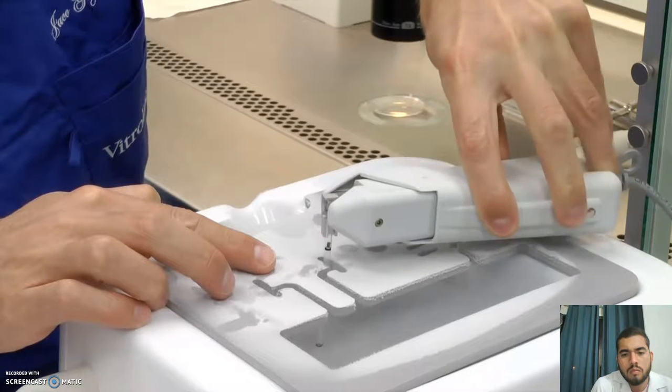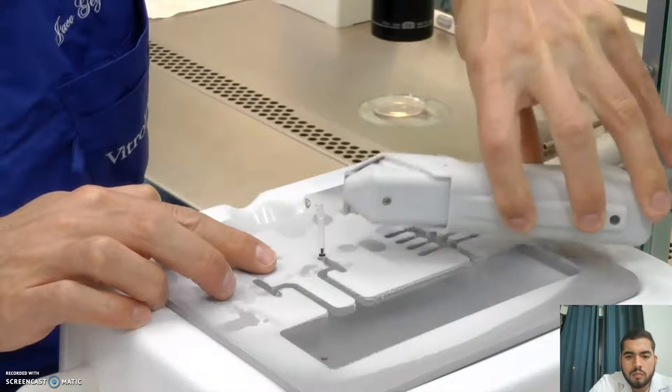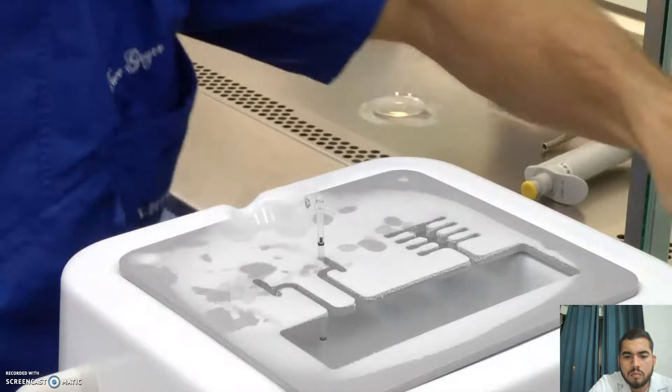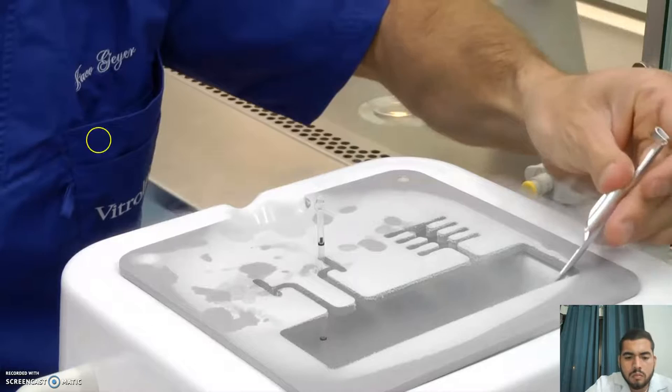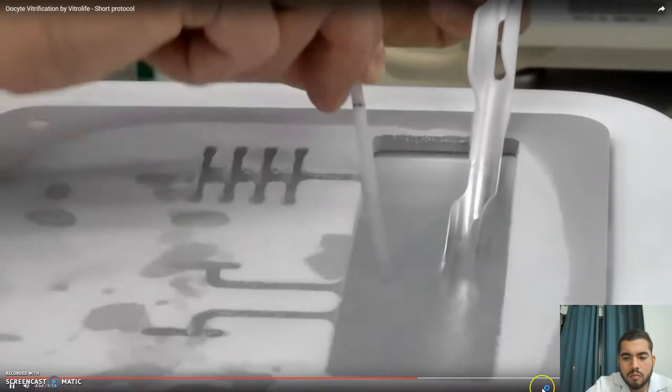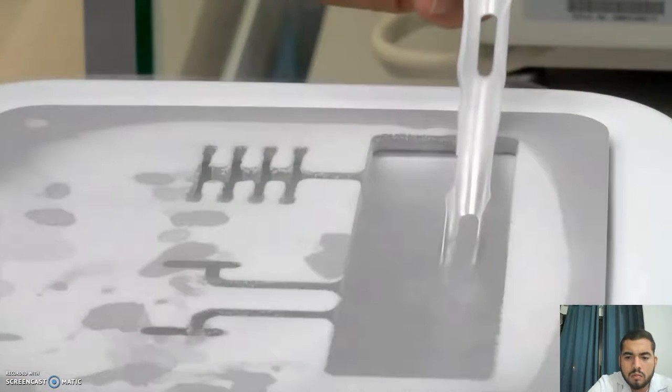Once vitrification has been done, immediately seal the straw with the ultrasonic sealer. The straw can now be moved into the cane. Make sure that you keep the oocytes under the level of the liquid nitrogen when doing this. The cane can now be moved into your storage system.